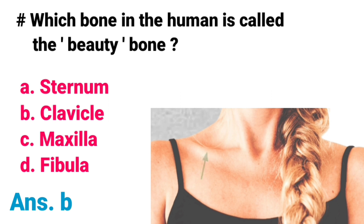Which bone in the human is called the beauty bone? A) Sternum, B) Clavicle, C) Maxilla, D) Fibula. Correct answer is option B, Clavicle. The beauty bone is mostly just another name for your collar bone or clavicle, especially in women. It is the bone located above the ribs in the chest.